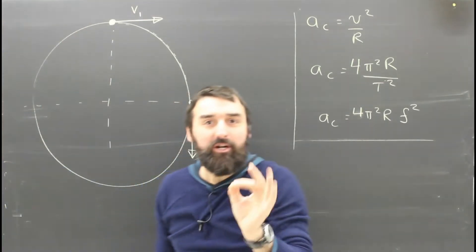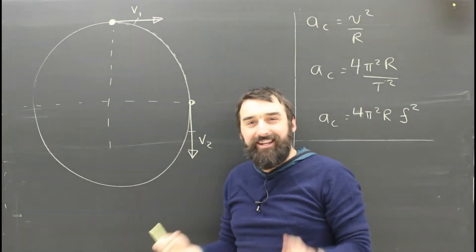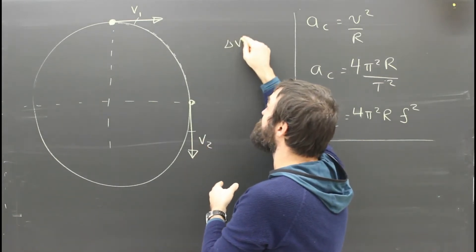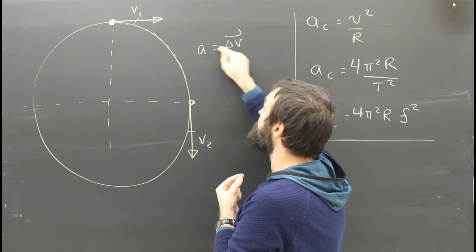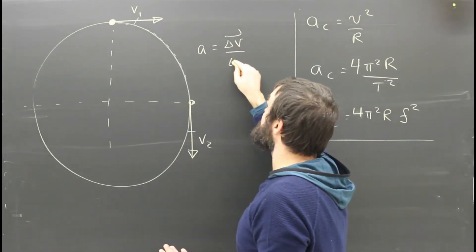If it's going at a constant speed, then these two vectors are going to be the same size. It hasn't sped up and it hasn't slowed down, but its velocity has for sure changed. And remember, that's the definition of acceleration. Rate of change of velocity, not speed.